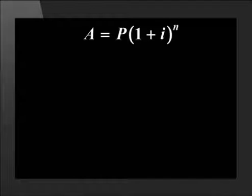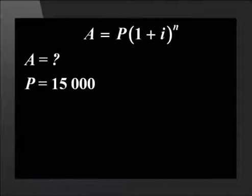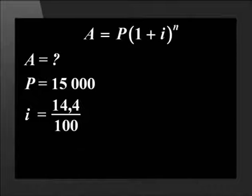It is important to remember the compound interest formula is to the power of n, whereas with the simple interest formula we multiply by the value of n. The formula is A equals P times (1 plus i) to the power of n. We don't know the value of A. The principal or starting amount is 15,000. The interest rate is 14.4%. To change this to a decimal, divide it by 100 and it will be 0.144.